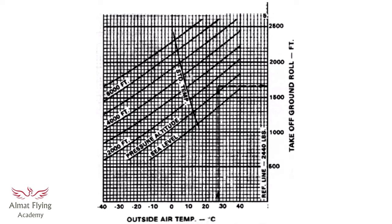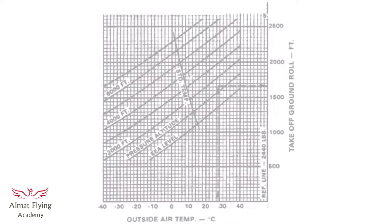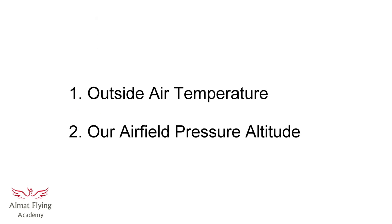Here is the first graph. It has an x-axis and a y-axis. The x-axis is your outside air temperature. The y-axis, and not a lot of people realize this, but it's actually the take-off ground roll. The graph also has a number of pressure altitude reference lines. The input data we need to start this is the outside air temperature and our airfield pressure altitude.